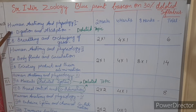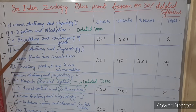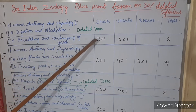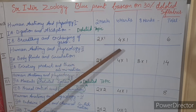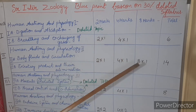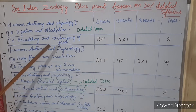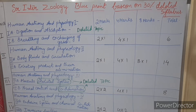Coming to 1B — Breathing and Exchange of Gases — here we have one two-mark question and we may get one four-mark question, so a total of six marks will come from this chapter. You have to focus on one two-mark and one four-mark question from this chapter.